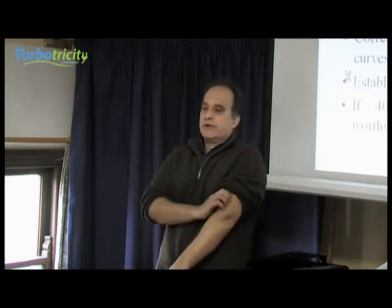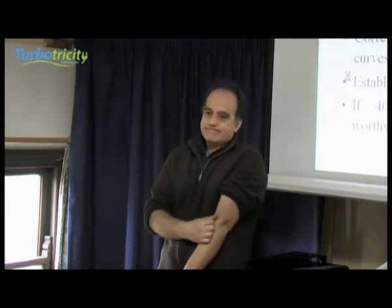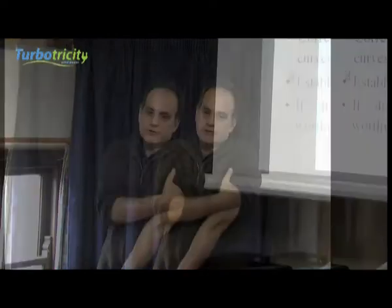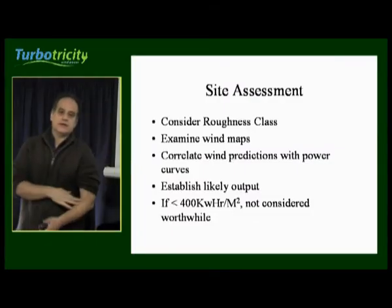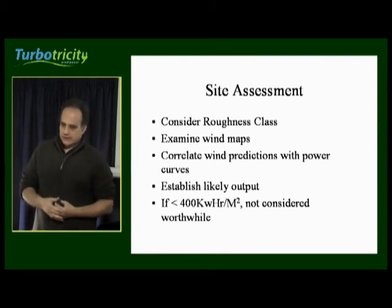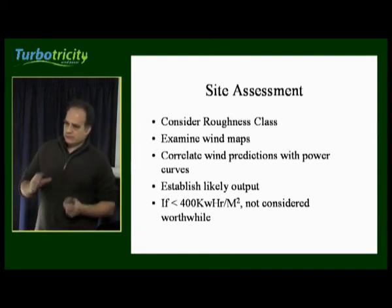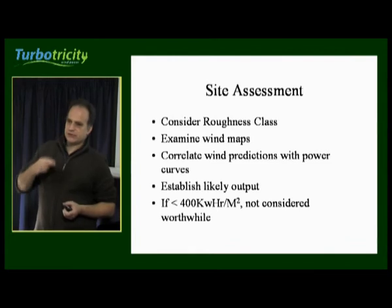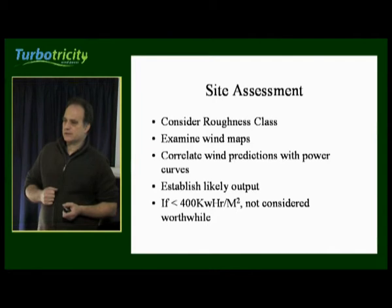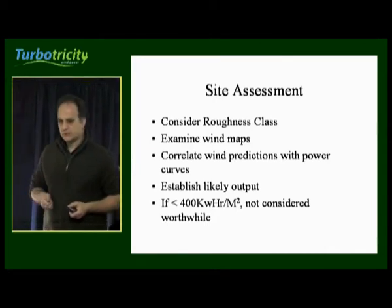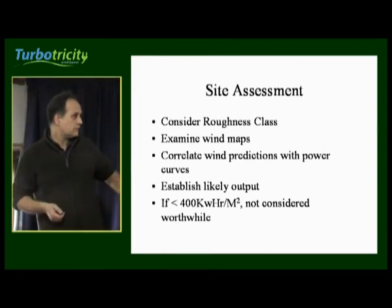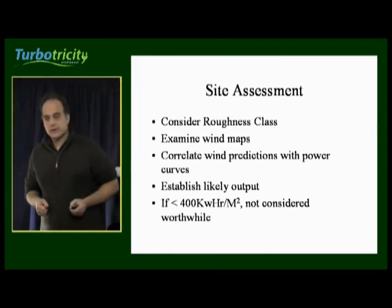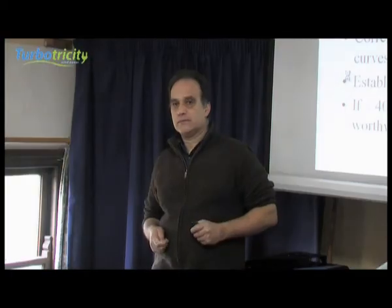We come on to the DESK method for assessing your site. First of all, you have to consider what the roughness class of your land is. You then examine wind maps and find out what the mean wind speed is in your area. You can correlate the wind predictions for your site with the power curves for your turbine, and then establish the likely output. If the net result is an output below about 400 kilowatt hours per square metre per year, the site is considered not worthwhile.